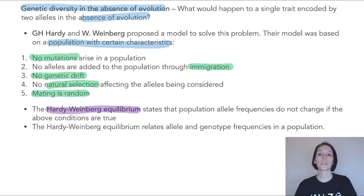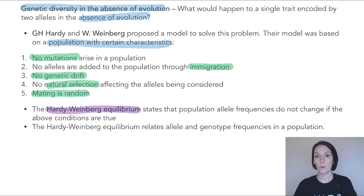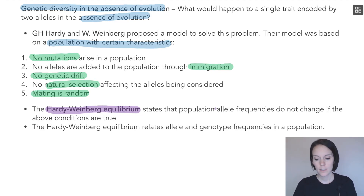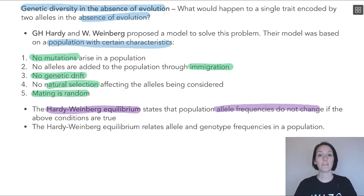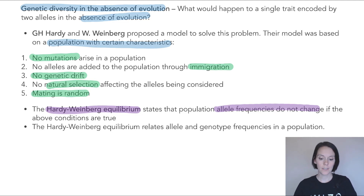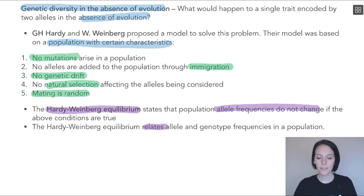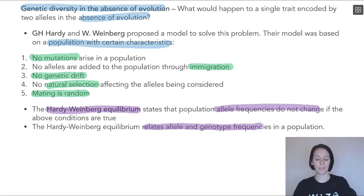The Hardy-Weinberg equilibrium states that population allele frequencies will not change over time if those conditions are true. Remember, evolution is a change in allele frequencies — if there's no evolution, there's no change in allele frequencies. So your allele frequencies stay the same if those five criteria are met. The Hardy-Weinberg equilibrium provides formulas to relate allele and genotype frequencies in a population.